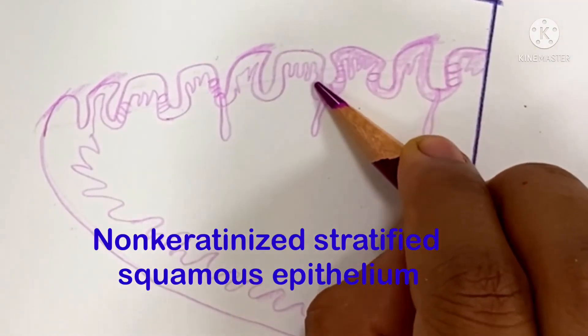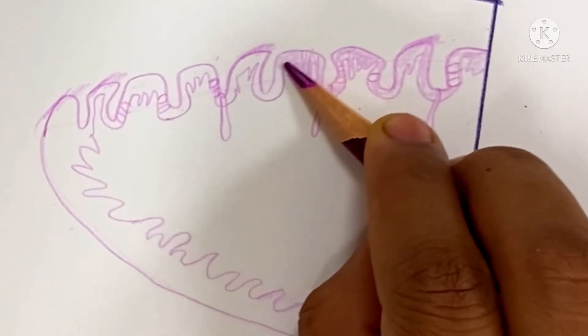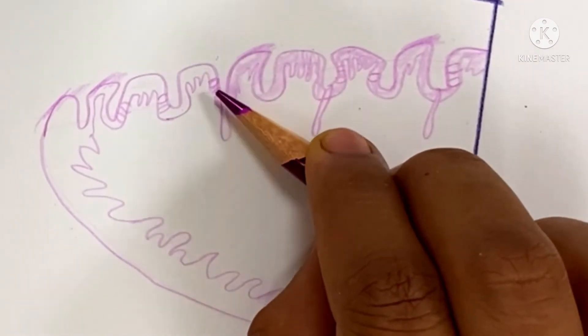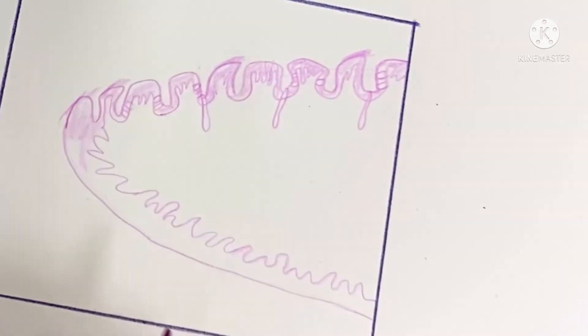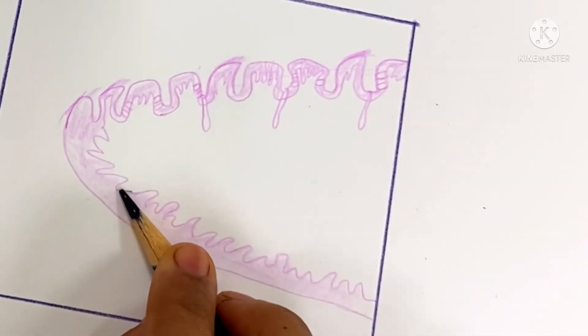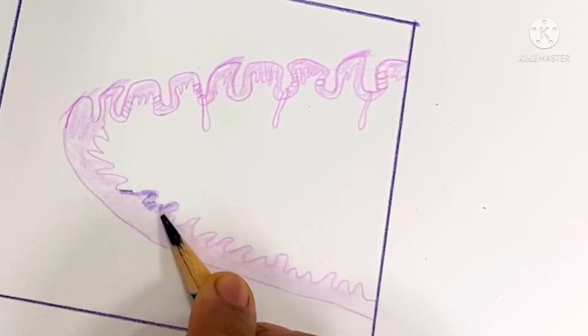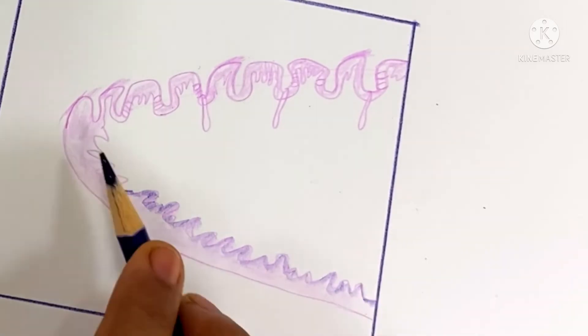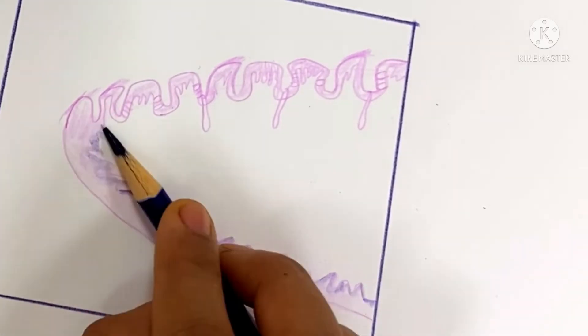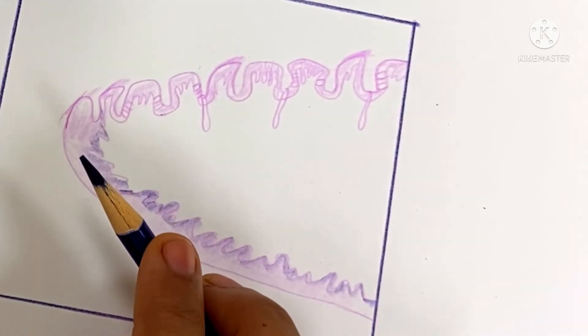The connective tissue projects inside the papilla. The epithelium is stratified squamous epithelium. The projection of connective tissue into the epithelium gives a wavy appearance and near the basement membrane, it gives a dark color.